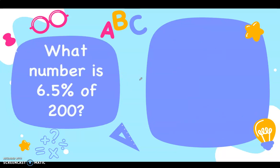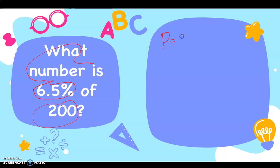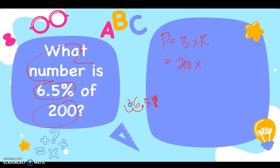Next: What number is 6.5% of 200? For the percentage, it is Base times Rate. The base is 200 and the rate is 6.5%. Remove the percent symbol. Since there is already a decimal point between 6 and 5, move two decimal places from that decimal point: count 1, 2. Since that place is empty, add 0. Therefore, 6.5% converted to decimal becomes 0.065.